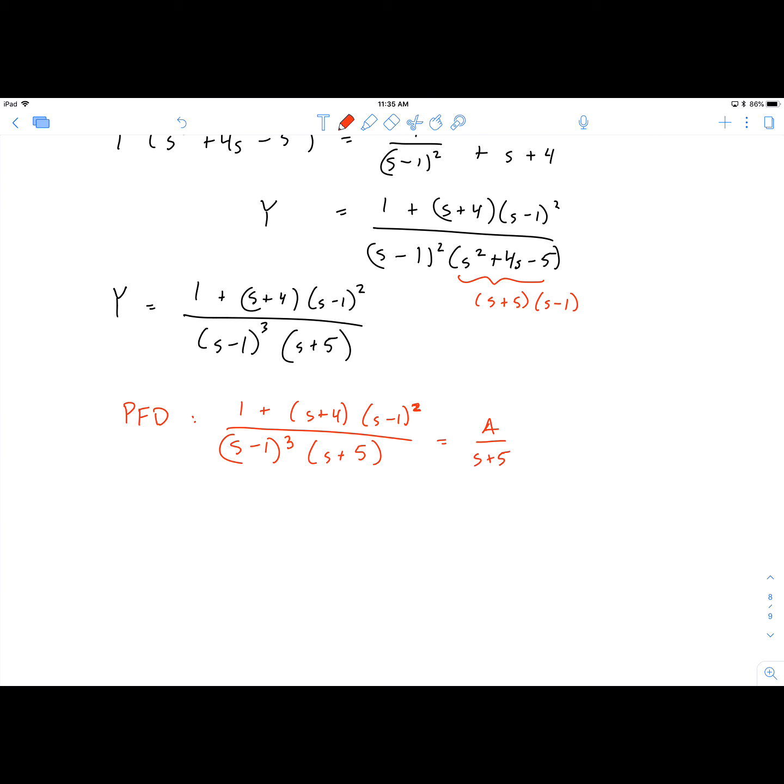So we have A over (s-1)... Well, let's do the (s+5) first to get that out of the way. We'll have B over (s-1), C over (s-1)², and D over (s-1)³. So that's just the structure of the setup of a partial fraction problem when you have a repeated factor in the denominator here.